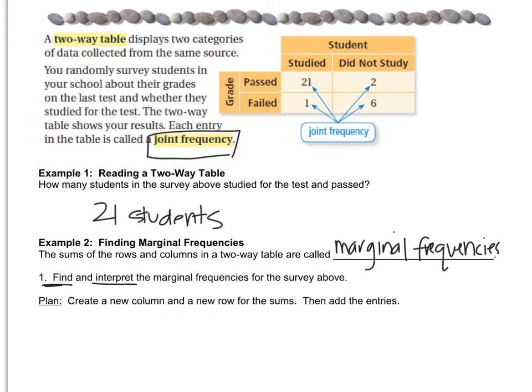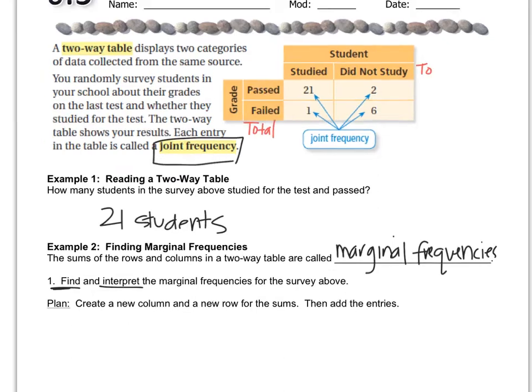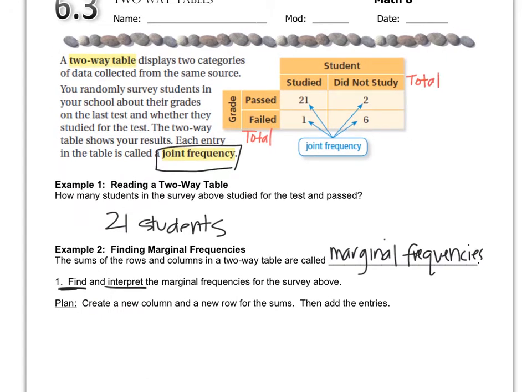So I'm going to go up to my table and add a row at the bottom called total. And what that's going to be is the total for each section. So the number that goes here is the total for the people who studied, because I'm just going to add down. So there were 22 people who studied, there were 8 people who didn't study, there were 23 people who passed and 7 people who didn't pass, who failed.